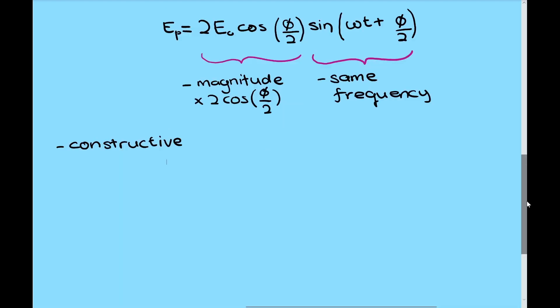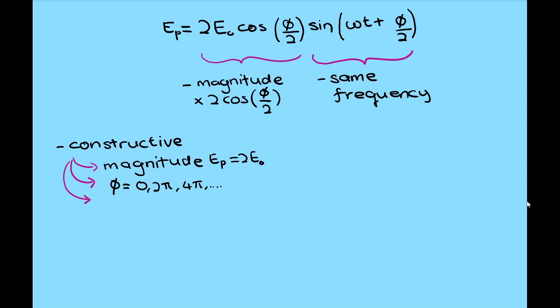For constructive interference, we have the magnitude twice the number of the source. It occurs when phase differ by 0, 2 pi, 4 pi, and so on so forth. And this is consistent with the condition for path difference delta is equal to d sin theta.